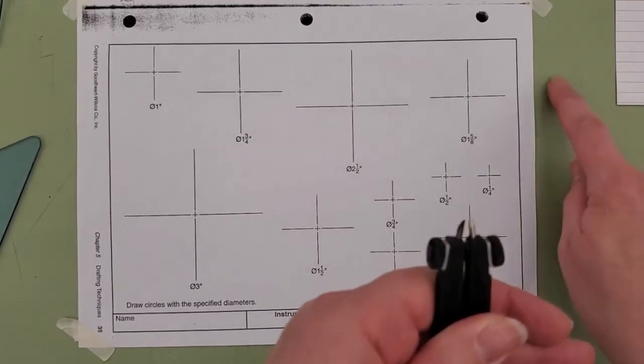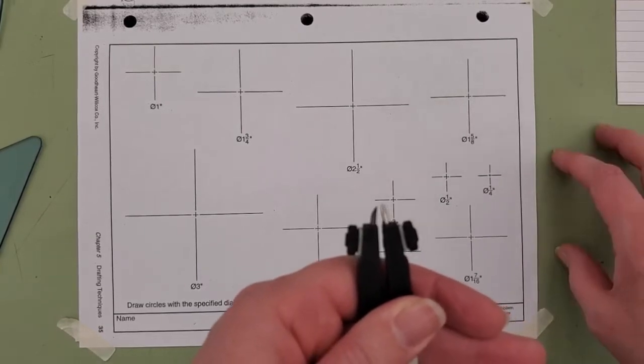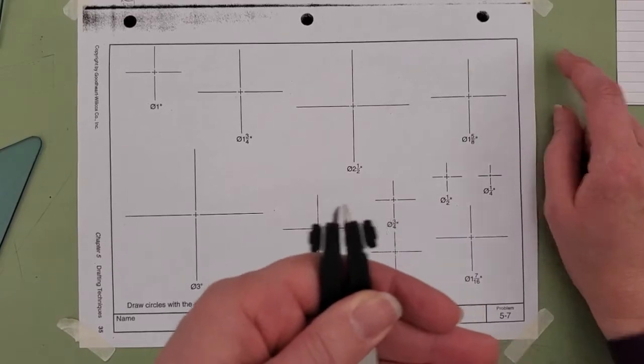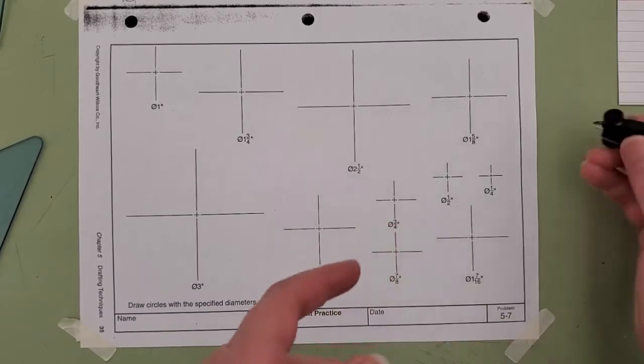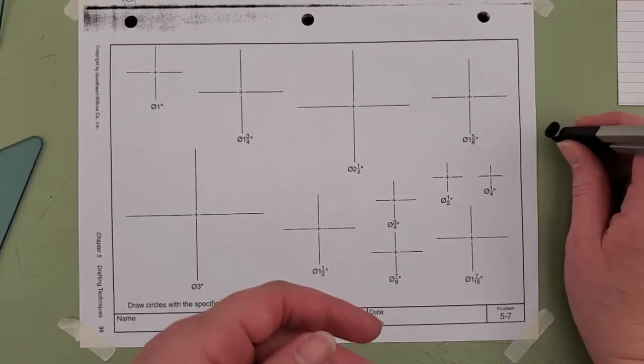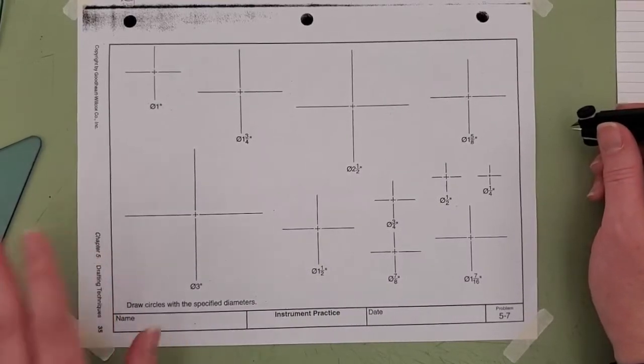This green mat that is on your desks and on your practice boards at home—it is self-healing to a point, mainly because you're able to penetrate into that, so it holds your compass still. Those of us who have used a compass in math class on those really hard desks...